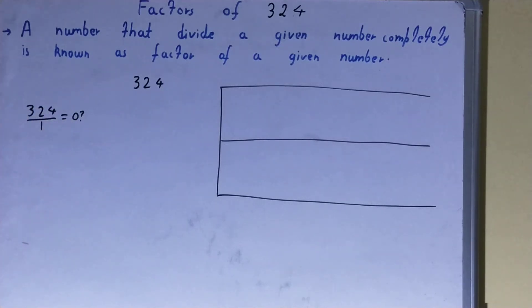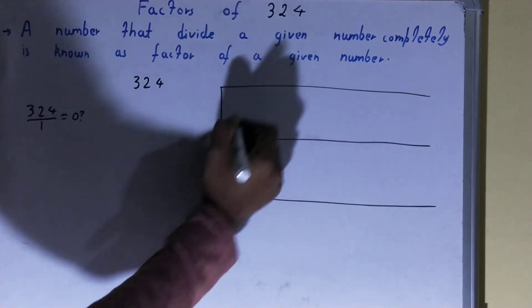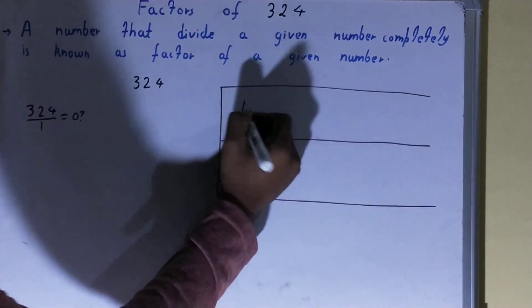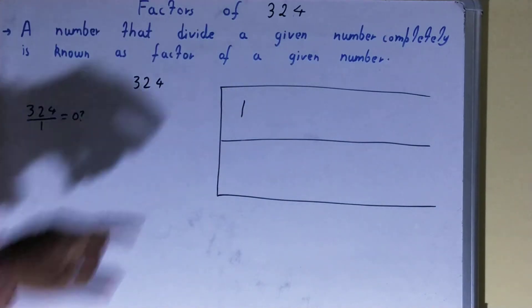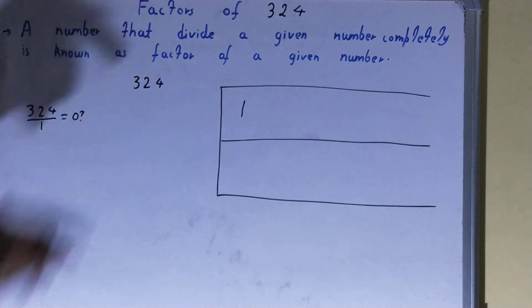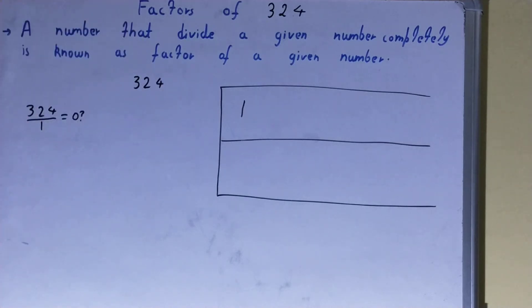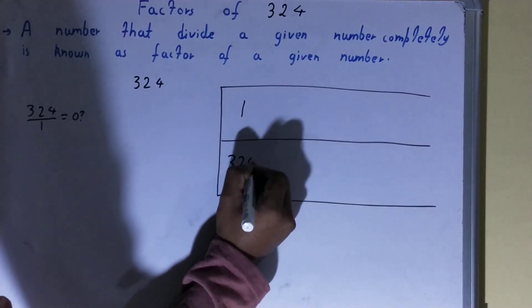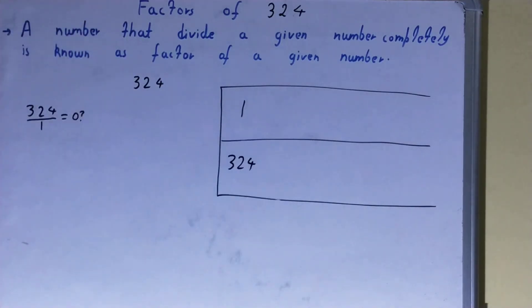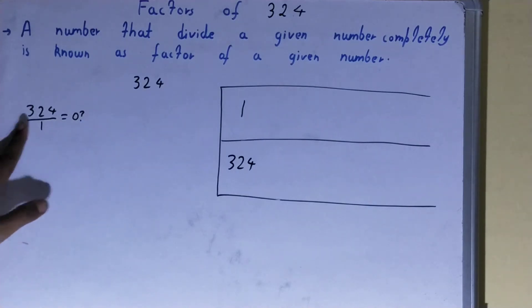We write 1 in the factor list. Using this, we can find another factor: 1 × 324 = 324, so 324 will also be a factor. After 1, we check with 2.